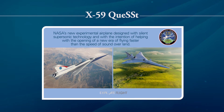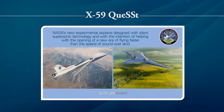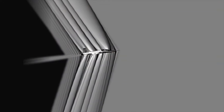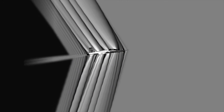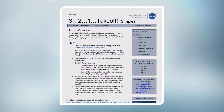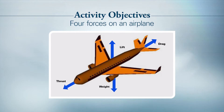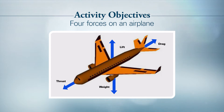The X-59 is one of NASA's X-planes that demonstrates silent supersonic technologies. This X-plane is being built, and once completed, NASA will use it to conduct research on the reduction of the sonic boom produced by supersonic flight. We will focus on the simple version of the 3-2-1 Takeoff activity. One of the main objectives is to show the four forces acting on an airplane: weight, lift, thrust, and drag.